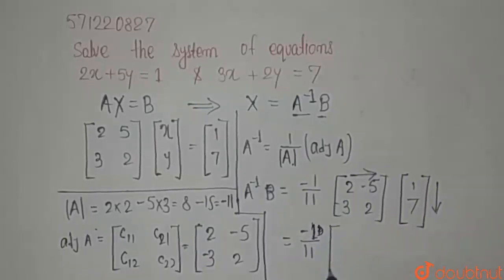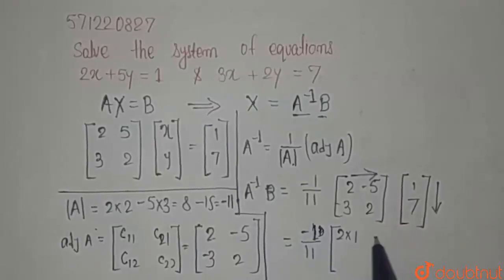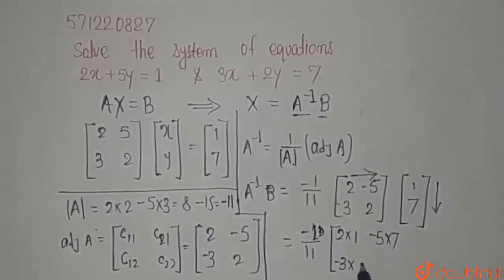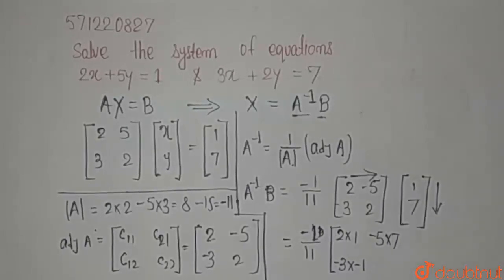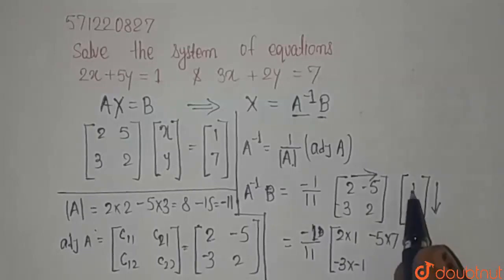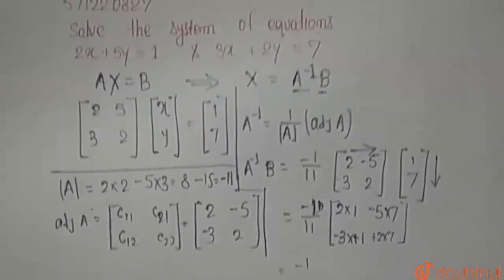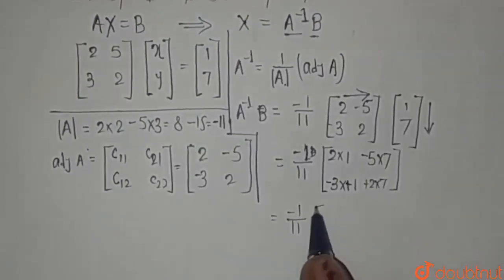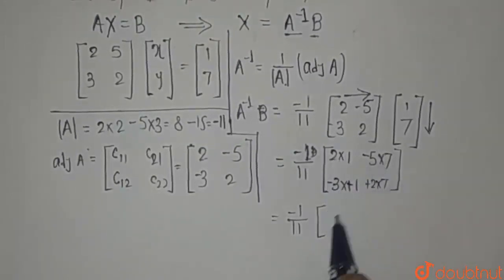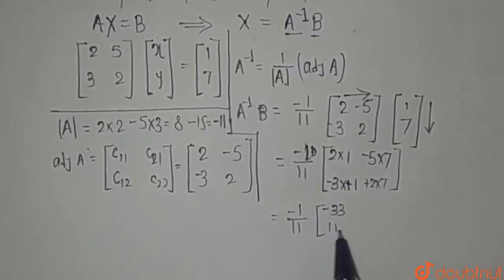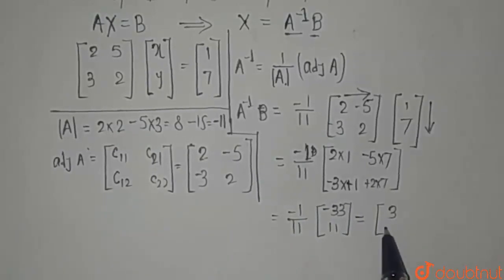Let's do this operation. We get 2 into 1, then minus 5 into 7 in the first row, and in the second row, minus 3 into 1, then 2 into 7. This gives minus 1 over 11 multiplied by the column matrix with entries 2 minus 35, which is minus 33, and minus 3 plus 14, which is 11. By multiplying through by minus 1 over 11, we get 3 and minus 1.